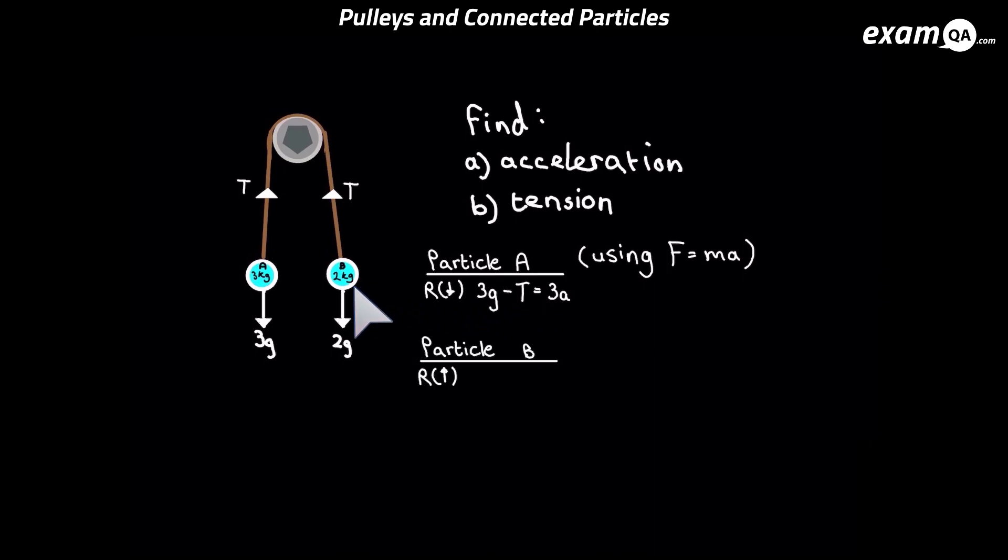In particle B I've changed my positive direction. I've made upwards my positive direction. Now why do you think I've made upwards my positive direction for B? You should have said it's because B is moving upwards. Of course, if A is heavier, A is causing the pulley to move downwards in its direction, which means B will be moving upwards.